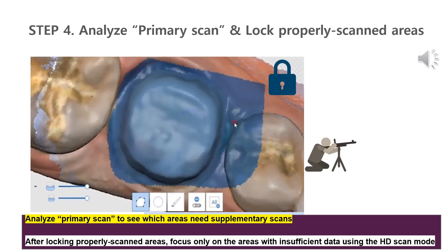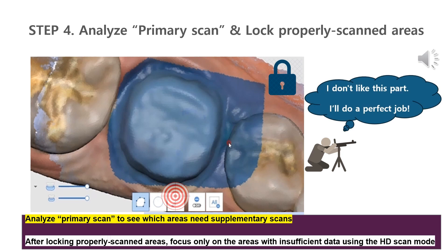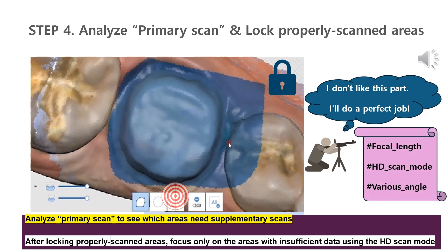Step 4: Analyze the primary scan to see which areas need supplementary scans, after locking properly scanned areas. Now it is time to evaluate the results of the primary scan. If the contact areas are not properly obtained, it is better to completely delete the scan data and perform the primary scan from the beginning — rescanning multiple areas will only result in inaccurate data. If the contact areas are well obtained, lock them with the lock function. The same applies to the body and margin if the data is well obtained. Expose only the parts that are insufficient so they can be scanned.